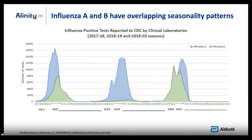This slide shows the seasonal patterns of influenza A and B infection, based on influenza positive tests reported to the CDC by clinical laboratories over three recent seasons. As you can see, the timing of influenza A and B infections significantly overlaps, meaning that at any given time, there could be co-circulation of both viruses in the same population.